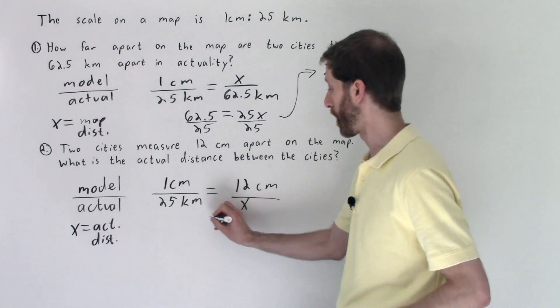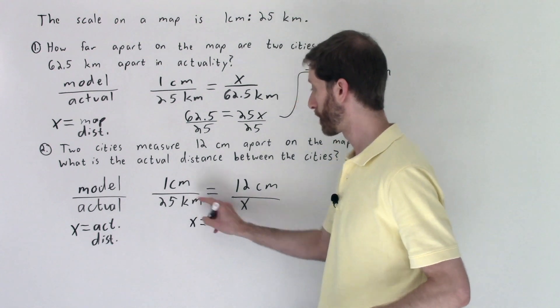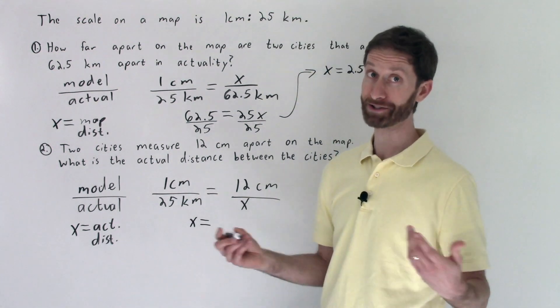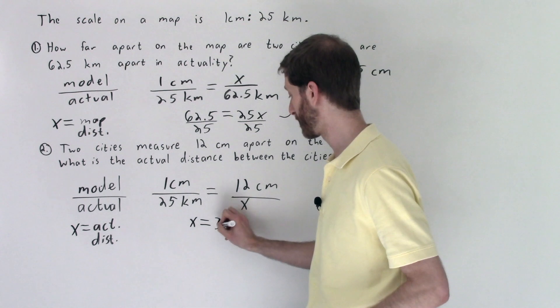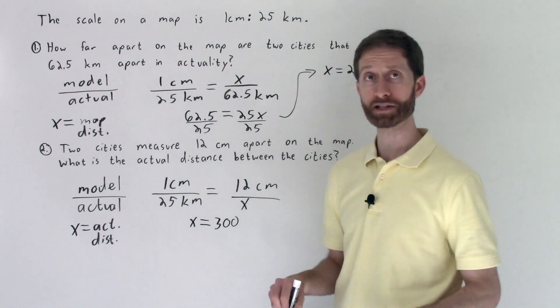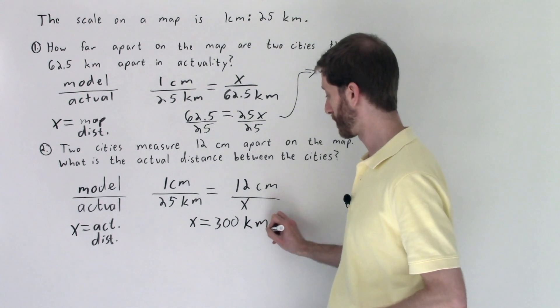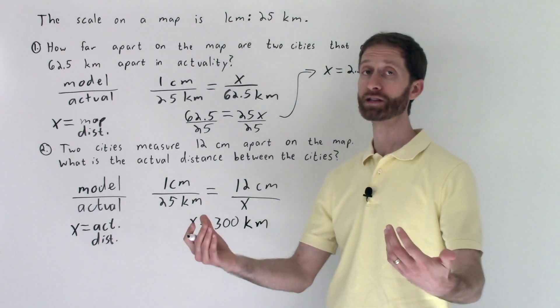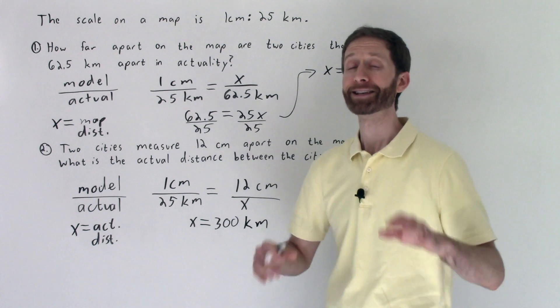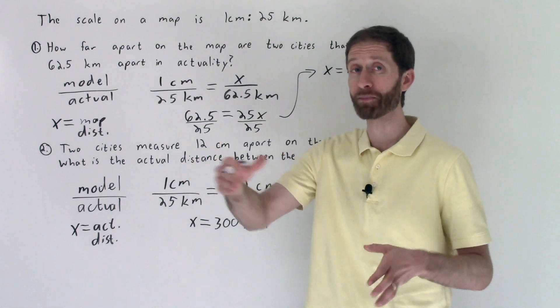So again we could define that x over here: x equals the actual distance. I'll say act dist just to abbreviate it. Now all we need to do is cross multiply. x times 1 is x, 25 times 12 is 300. And we know that our units need to be in kilometers because that's the comparison point that we were trying to find. So the actual distance between the cities: 300 kilometers.